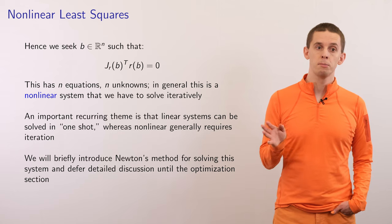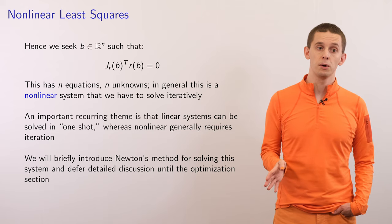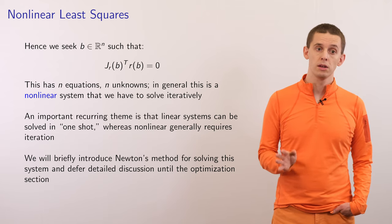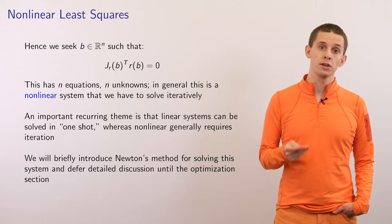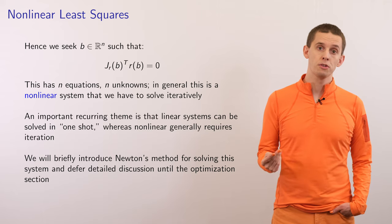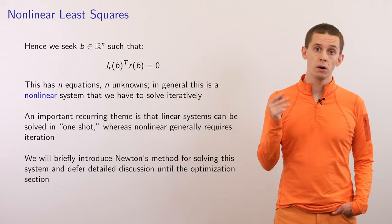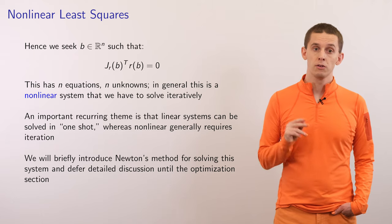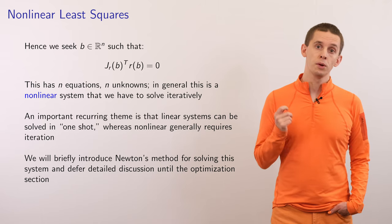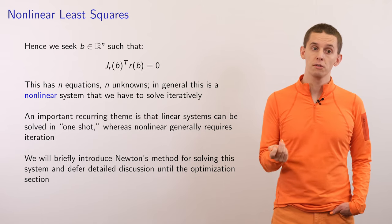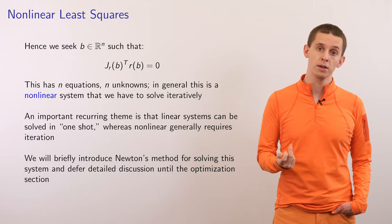We see that this nonlinear least squares formalism contains within it our previous least squares solution of the normal equations. Therefore we now want to find b such that J_r of b transpose times r of b equals zero. This is n equations and n unknowns, but in general it will be a nonlinear system that we must solve using an iterative method. This is a general theme throughout this course: linear problems can often be solved in one shot, whereas nonlinear problems often require some kind of iteration. Here we'll introduce Newton's method, which can be used to solve this system.